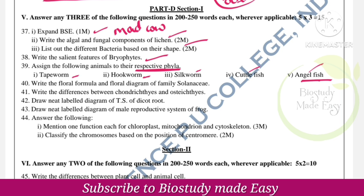Floral formula and floral diagram of family Solanaceae. Differences between Chondrichthyes and Osteichthyes — very important question. Dicot root, male reproductive system of frog, functions of chloroplast and mitochondria, cytoskeleton organelles with functions. Classify chromosomes based on position of centromere.